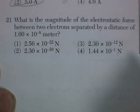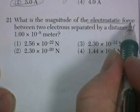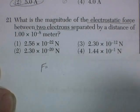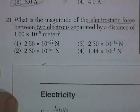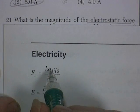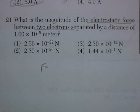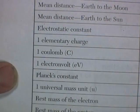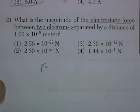Question 21. This is a hard one. What's the magnitude of the electrostatic force between two electrons separated by a distance of 1 times 10 to the negative 8 meters? It's this equation here. F equals KQQ over R squared. So you need to know the charge of an electron. And that's on the front of your reference table. That's one elementary charge. It's also the charge of a proton. And it's 1.6 times 10 to the negative 19 coulombs.